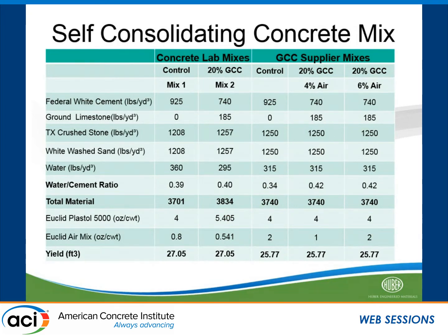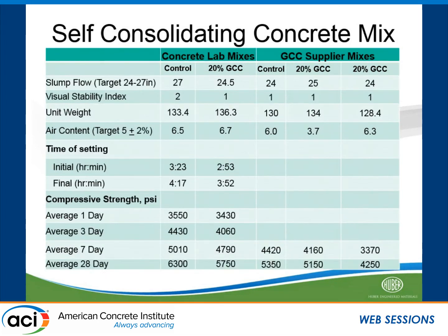Here are some concrete mixes we did using a self-consolidating mix with white cement. We were using Texas crushed stone and Texas whitewashed sand, along with our Marlapos, Texas ground calcium carbonate. We tried to keep parameters the same as far as dosage with high-range water reducer and air mix. These are two different sets — one done in an outside lab with concrete lab mixes and one done by Acid Carbonate. As we've seen in previous presentations, using ground limestone really doesn't affect the fresh or hardened properties. In this case, we did see a slight decrease in set time, and in the strengths we saw some drop off, which can be expected looking at the different air contents.